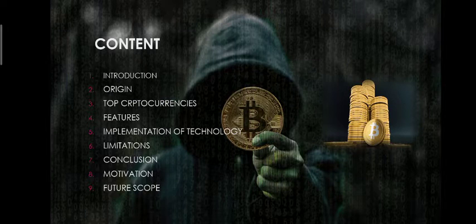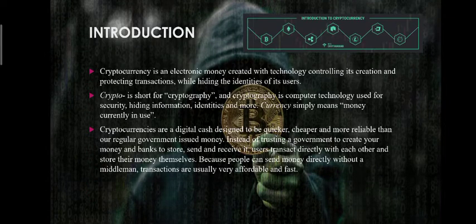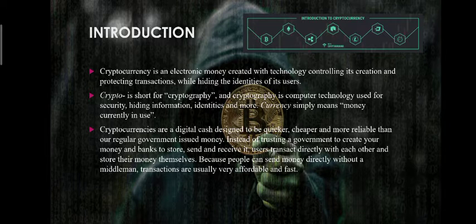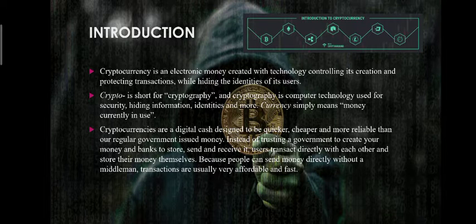Introduction to Cryptocurrency. Cryptocurrency is an electronic money credit with the technology controlling its creation and protecting transactions while hiding the identity of its users. Crypto is short for cryptography, and cryptography is computer technology used for security, hiding information, identity, and more. Currency simply means money currently in use.